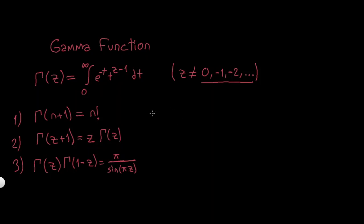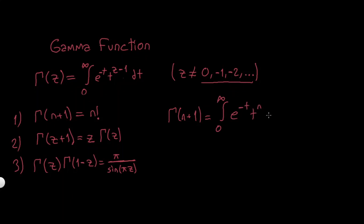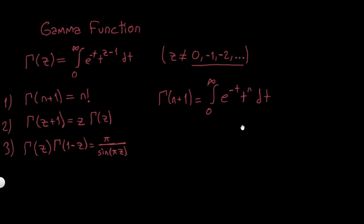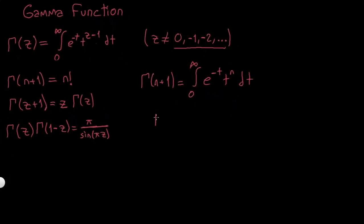So let's see what we can do. I'm going to prove the first property by writing gamma(n+1). I'm going to use the definition and show it's indeed n factorial. So gamma(n+1) equals, substituting z = n+1, the integral from 0 to infinity of e^(-t) * t^n dt. To evaluate this integral, I'll use integration by parts via the tabular method, which makes this much simpler.